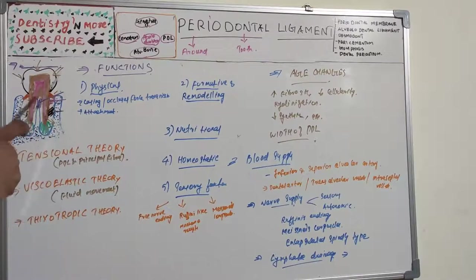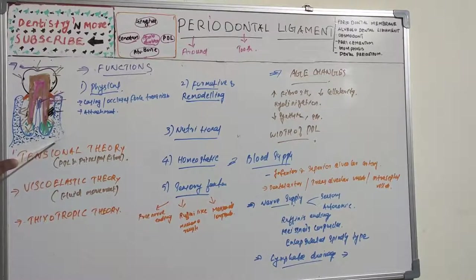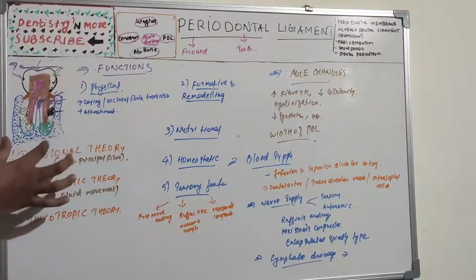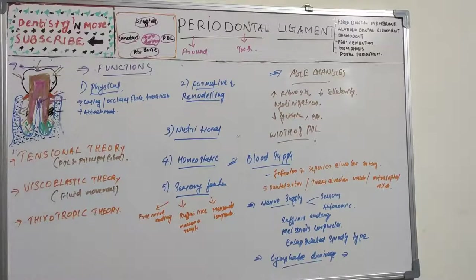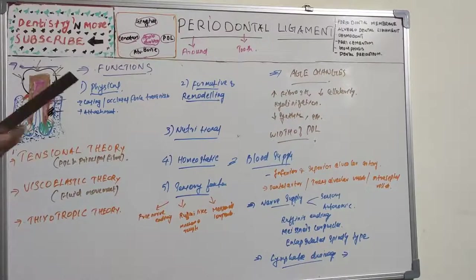Tensional theory states that when a force is applied to the crown, the principal fibers first unfold and straighten, then transmit the force to the alveolar bone, causing elastic deformation of the bone socket. When the alveolar bone reaches its limit, the load is transmitted to the basal bone — the mandible and maxilla. Principal fibers are considered the major factor in supporting the tooth and transmitting forces.